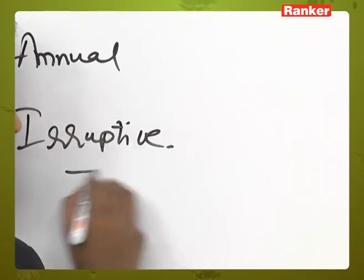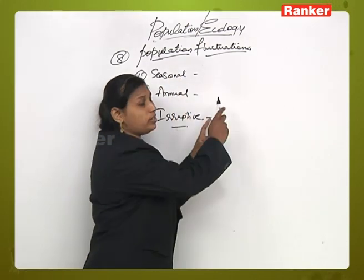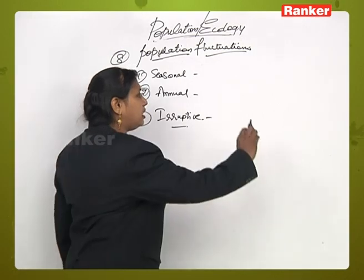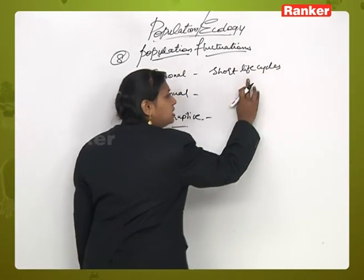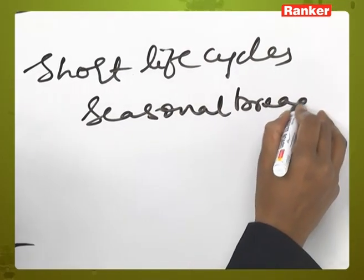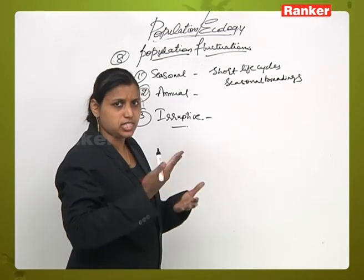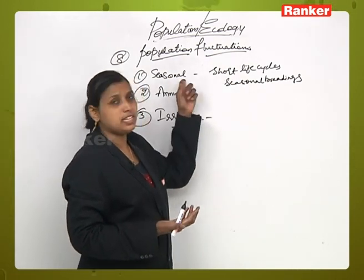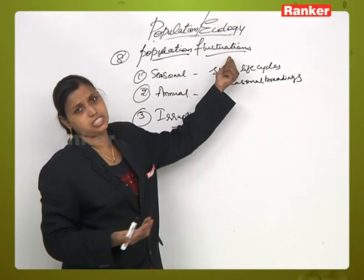As the name indicates, seasonal fluctuation means a fluctuation which occurs on the basis of seasonal changes in the environment. For example, plants which have short life cycles and seasonal variation — those plants or animals which show seasonal breeding depend on different seasons; their growth and decline everything depends on seasons. Fluctuations occurring in seasonal form or due to environmental changes are called seasonal fluctuations.